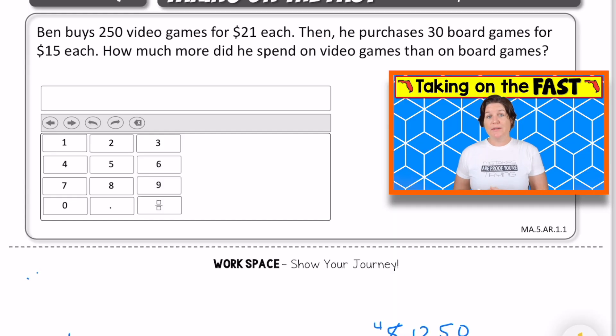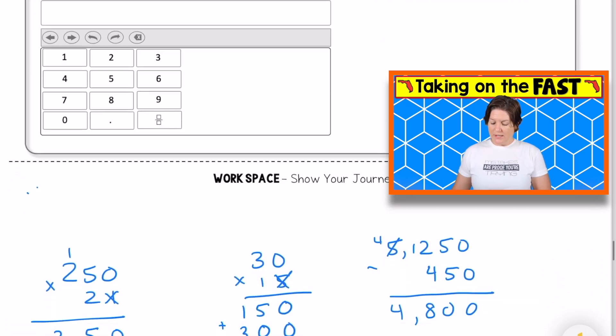This next problem is an equation editor problem. So we're using the equation editor tool to punch in our answer. It's not a calculator. It's actually where we can input our answer. So this one says that Ben buys 250 video games for $21 each. Then he purchases 30 board games for $15 each. How much more did he spend on video games than on board games?